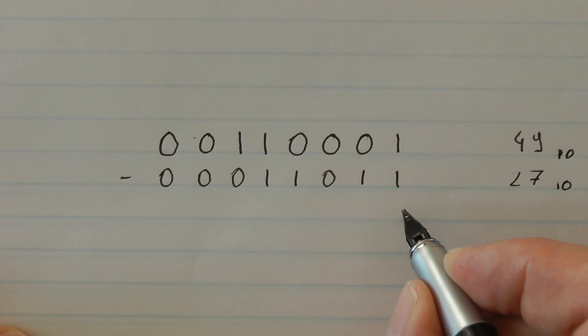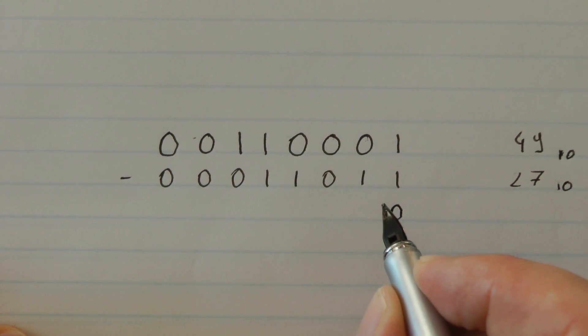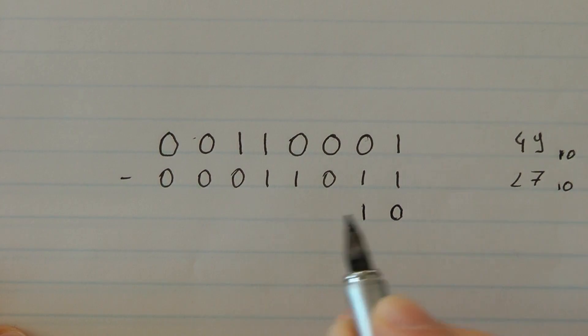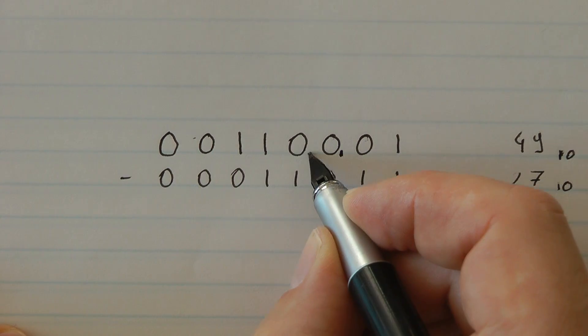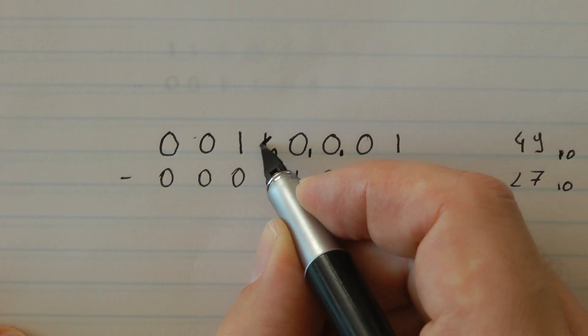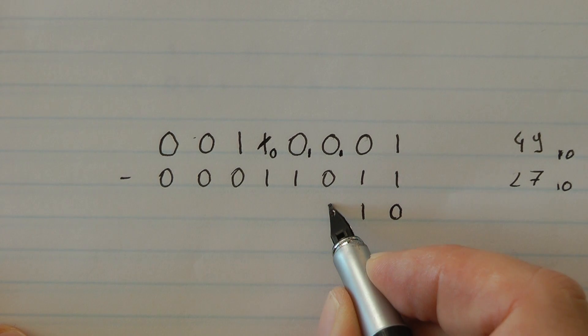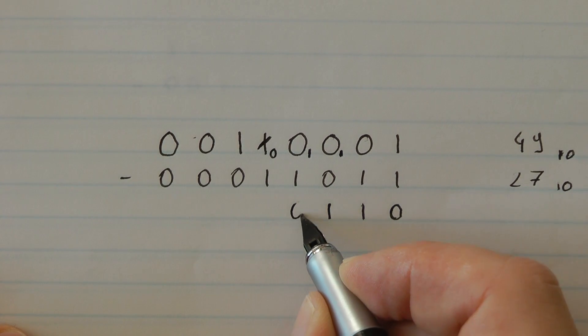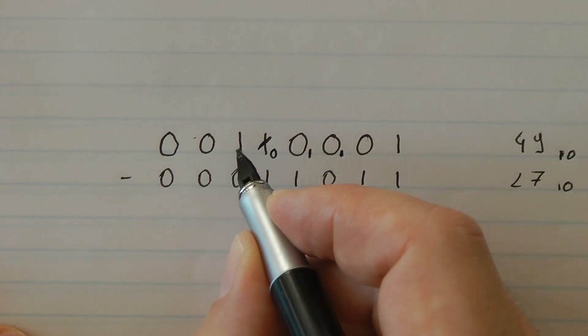1 minus 1 is 0. 0 minus 1 is 1 and a borrow. So I need to go and get my borrow all the way from here. So now I have 1 minus 0 is 1. 1 minus 1 is 0. 0 minus 1 is 1 and a borrow.